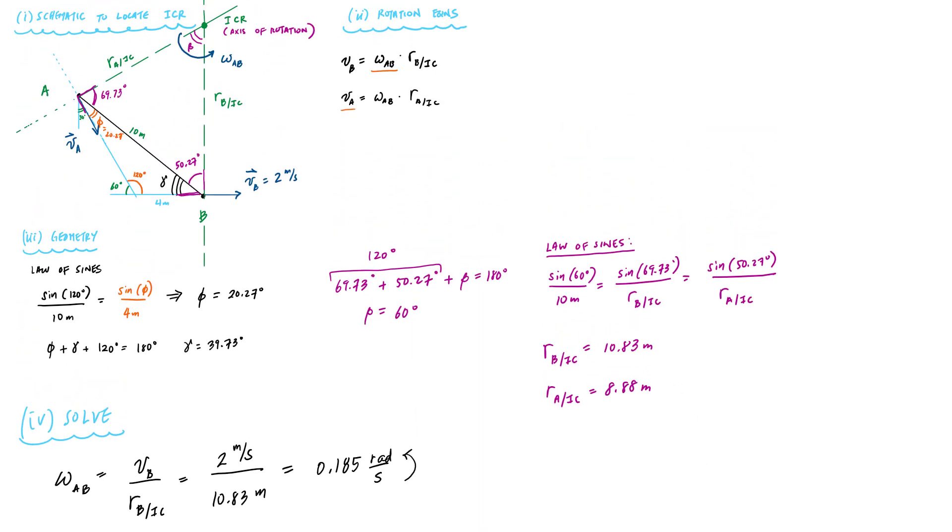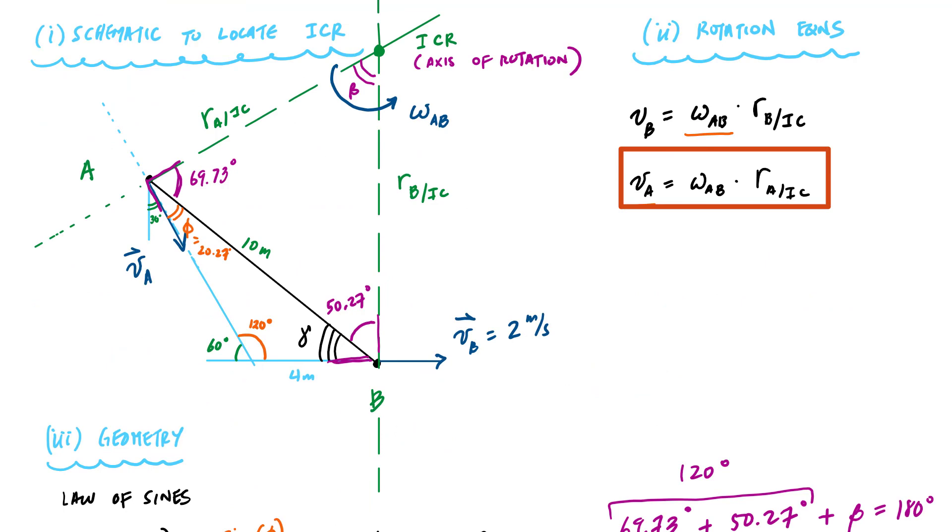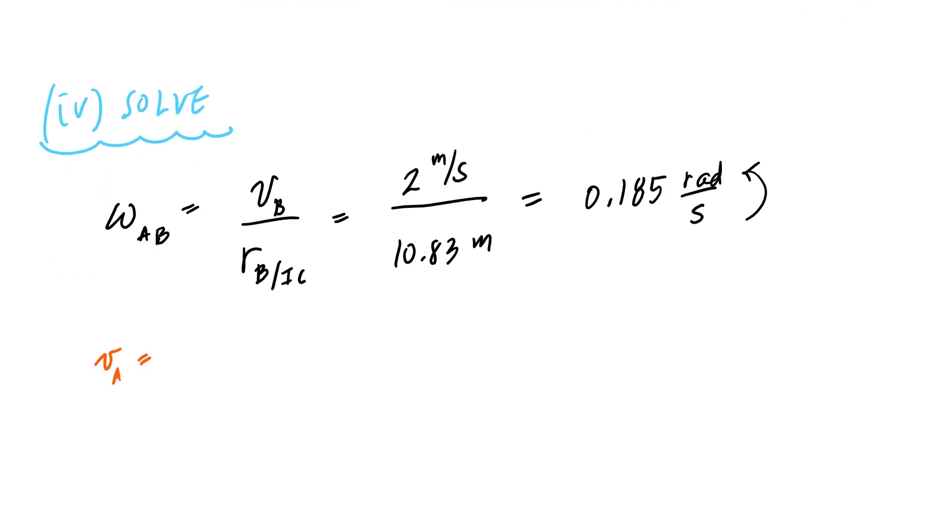And then I can use my other velocity relationship. I can use this VA, this second relationship here to find VA. And VA is equal to omega AB times RAIC, which would be 0.185 radians per second times 8.88 meters. And this will give me 1.64 meters per second. And we also know the direction already because we know the direction of omega. We know that this will be 60 degrees down the incline.